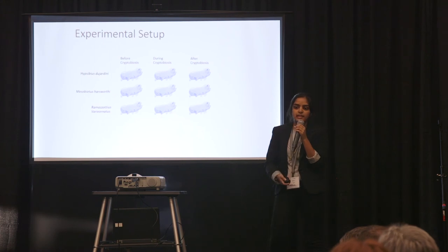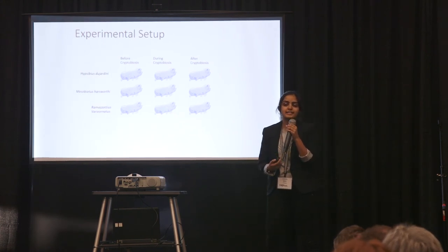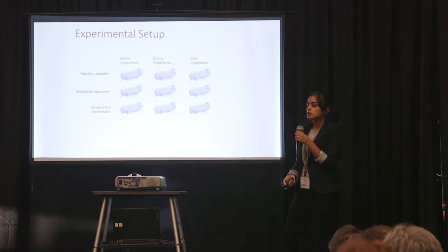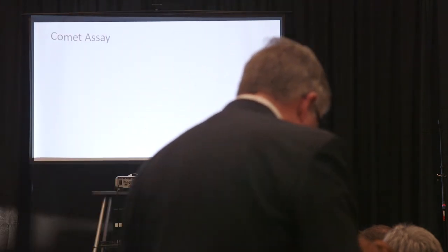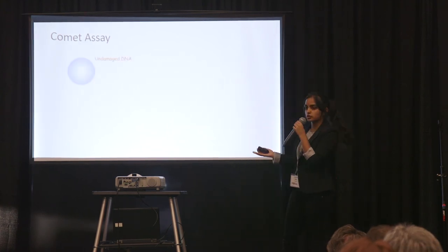So the way to examine the amount of DNA damage in an organism is by using what's known as a comet assay. So when DNA is undamaged, it is very compact and tight, creating a sphere-looking effect.